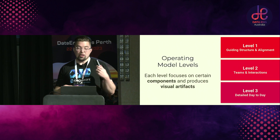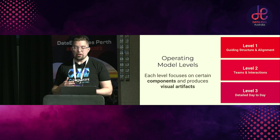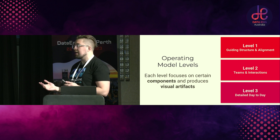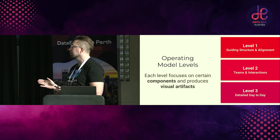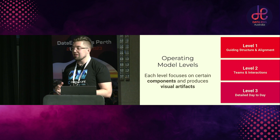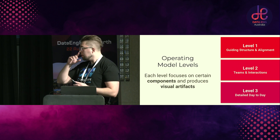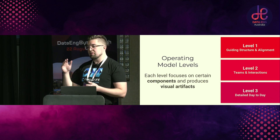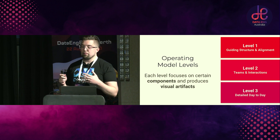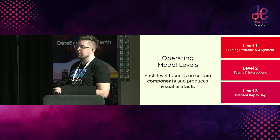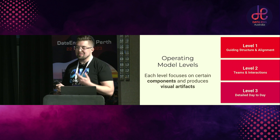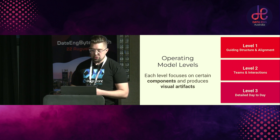The way we approach operating models is split into three levels. Level one is guiding structure and alignment — making sure everyone's pulling in the right direction. Level two is teams and interactions. Level three is your more detailed day-to-day stuff. You have to start at level one, but you can stop at each level as you get through them. Generally we don't go all the way to level three — we usually stop at level two, but I'll go into the detail and you'll see why we stop at certain places.